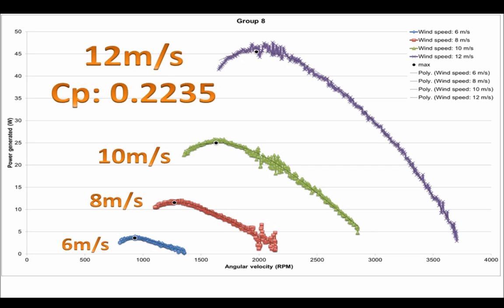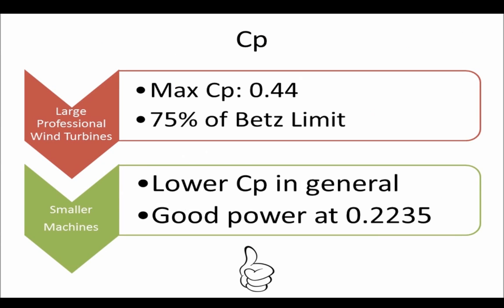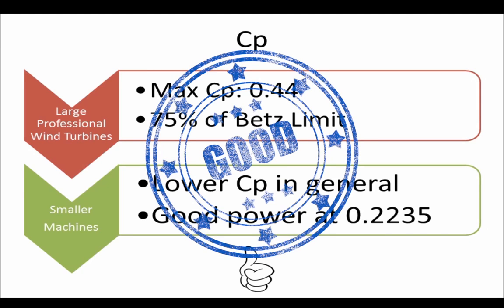Of the four wind speeds tested, our turbine generated the highest power at 12 meters per second with 48 watts or a power coefficient of 0.2235. Considering the fact that large professional wind turbines generate a maximum CP of 0.44 or 75% of the Betz limit, and also that smaller machines usually produce much less than this, we believe our design produced good power.